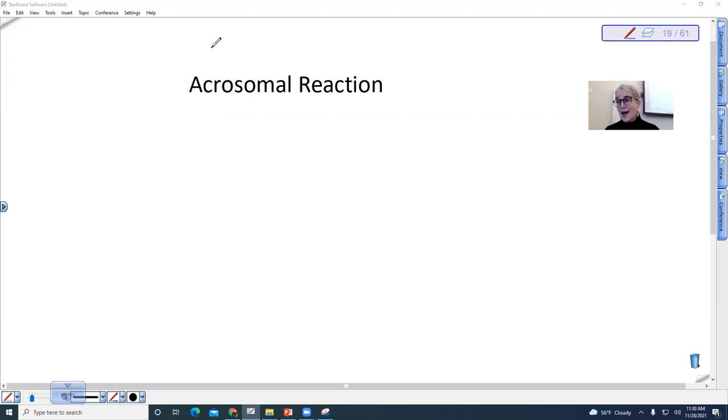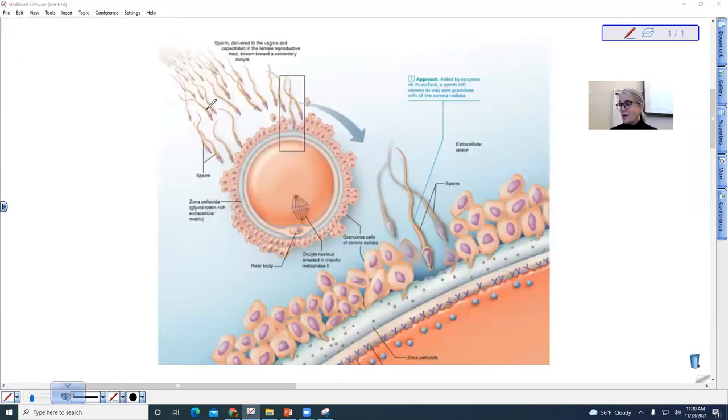So when we look at what happens when the sperm finally get to the egg, we can see that it has a lot of barriers to actually getting to the egg to fertilize it. And so actually it is not the first sperm that gets to fertilize the egg because the sperm actually have to work together to break down the barriers.